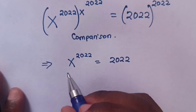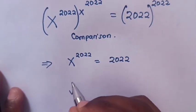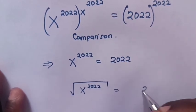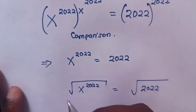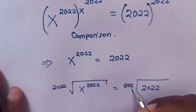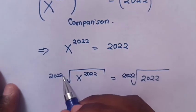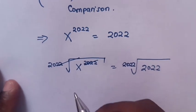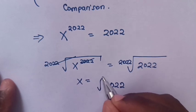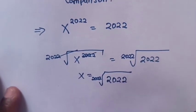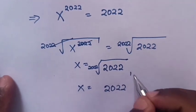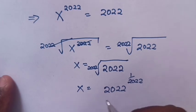Now we apply the 2022nd root on both sides. So x power of 2022 equals 2022. Applying the root of 2022 on both sides, the root of 2022 cancels with the power of 2022, giving x equals 2022 to the power of 1 over 2022.